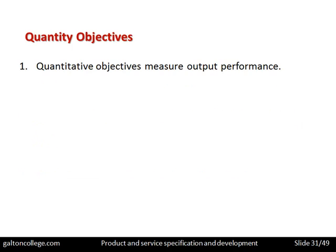Quantitative objectives measure output performance — how many units can be output from a particular section per day, per week, or per month? How many come off the production process? This could be processing through an office or a service as the product. What's the quantity that can be produced?